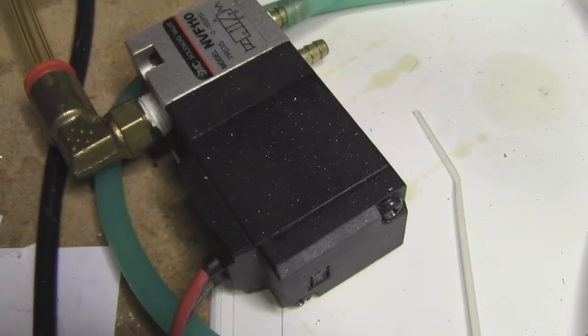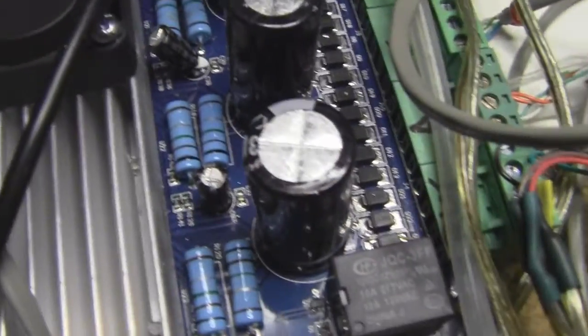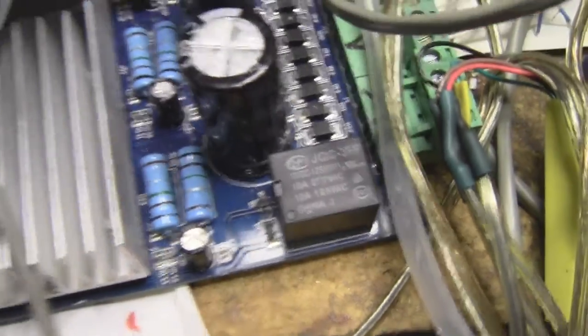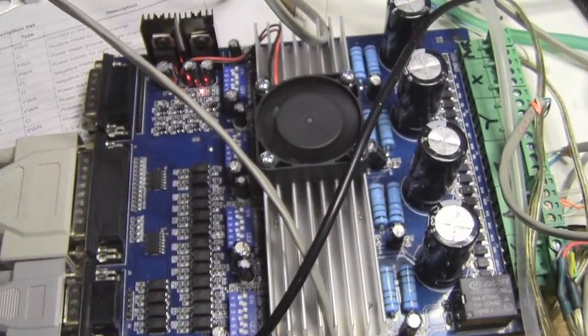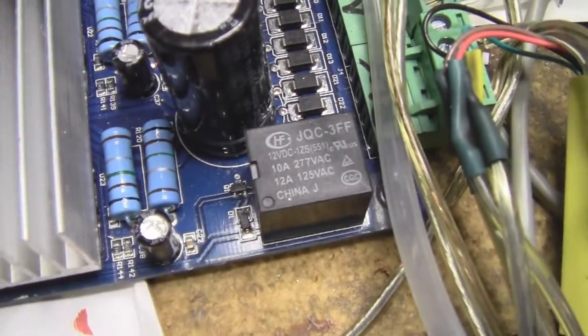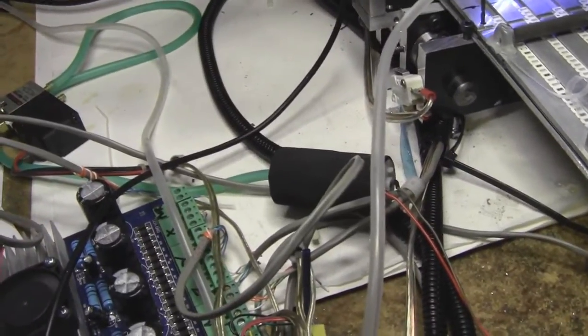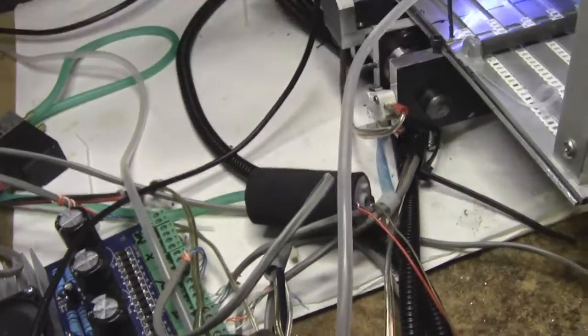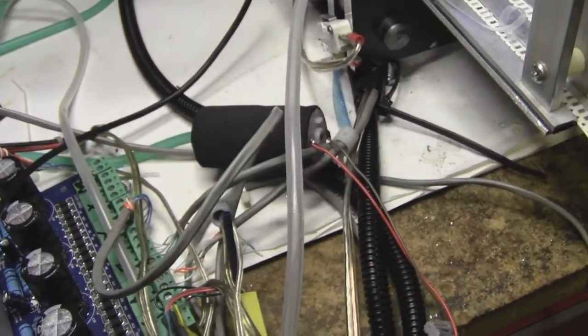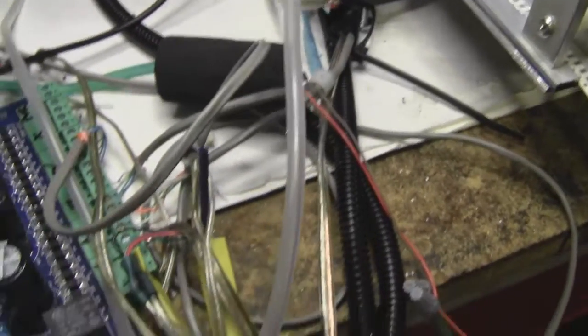And then it has this pneumatic switch here which is hooked to the spindle output of this stepper motor driver board—that's the spindle output right there. I'll turn the vacuum on. It's kind of loud, so that's the vacuum.